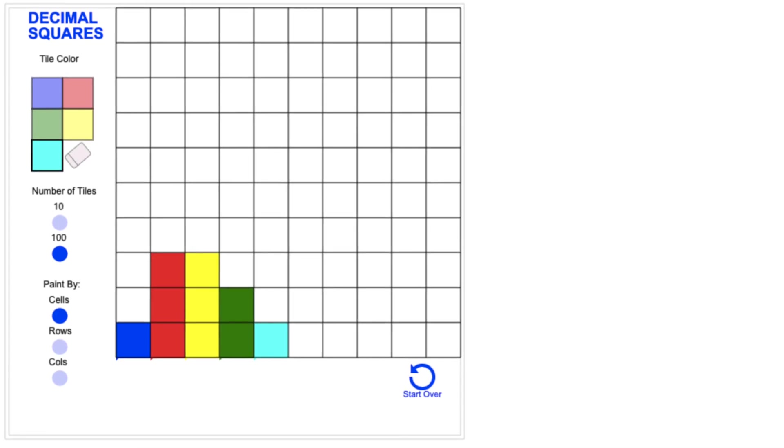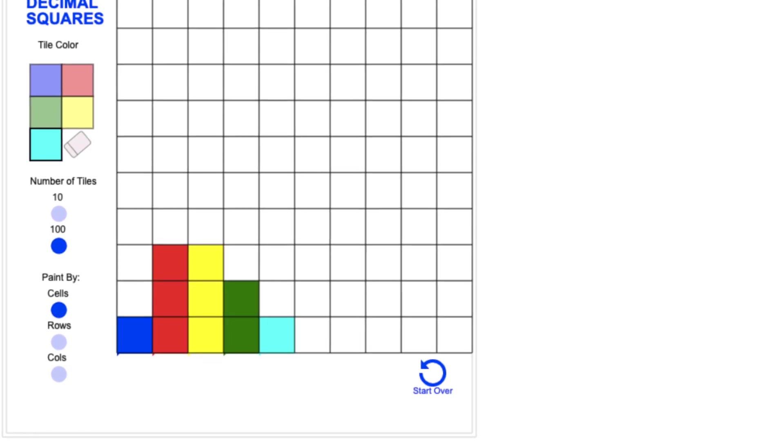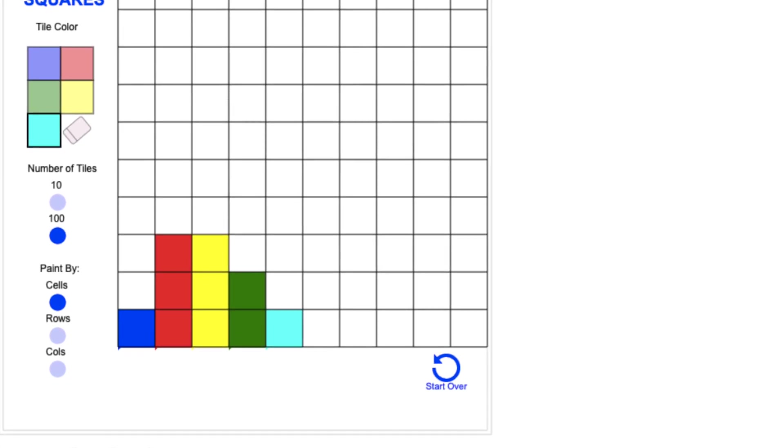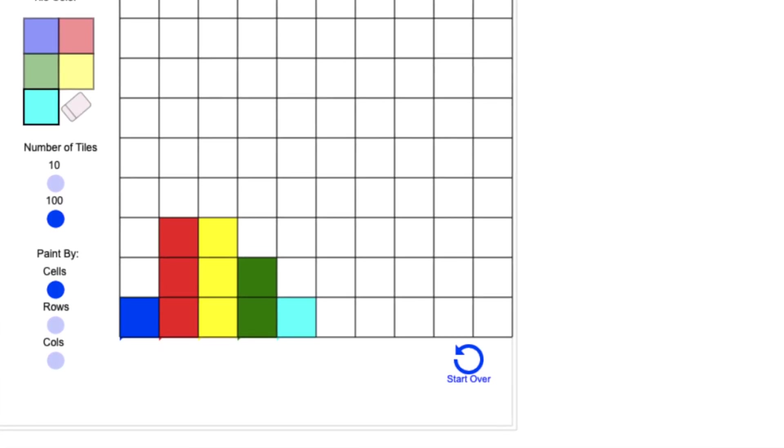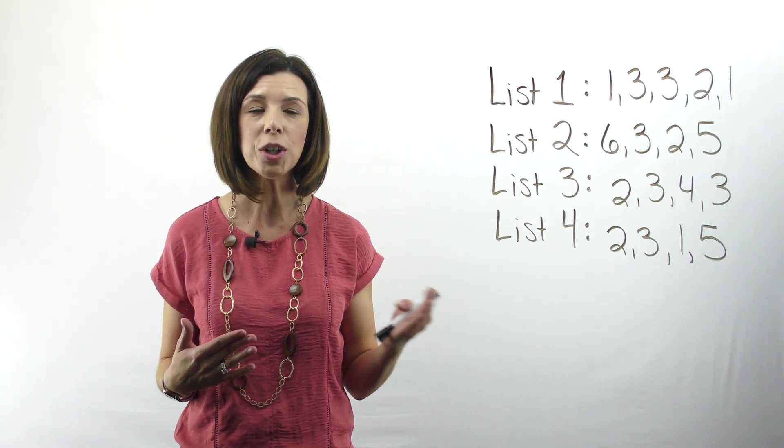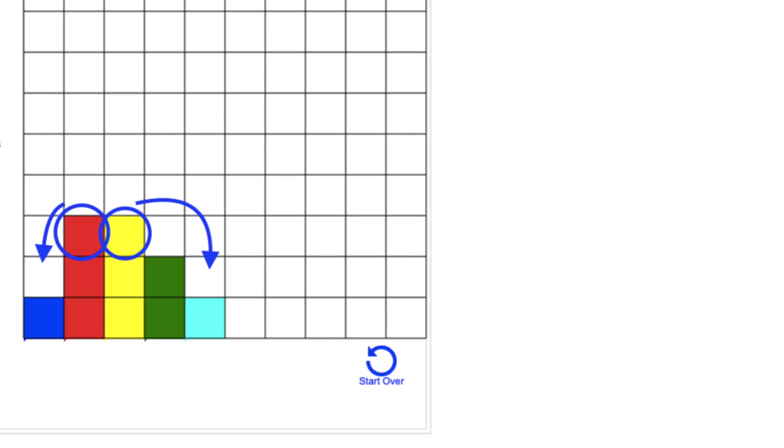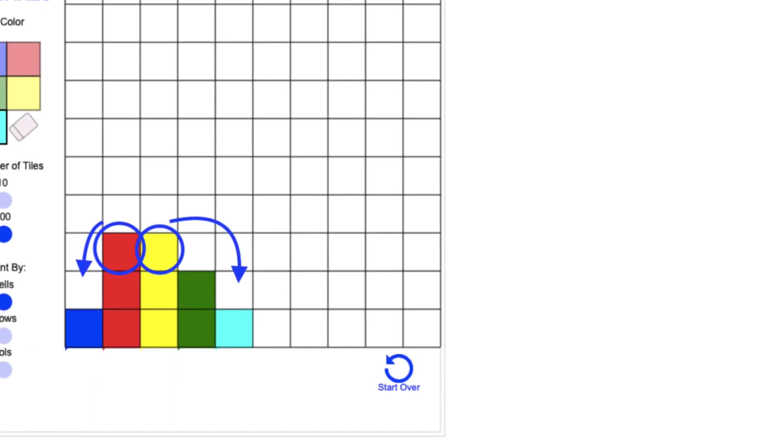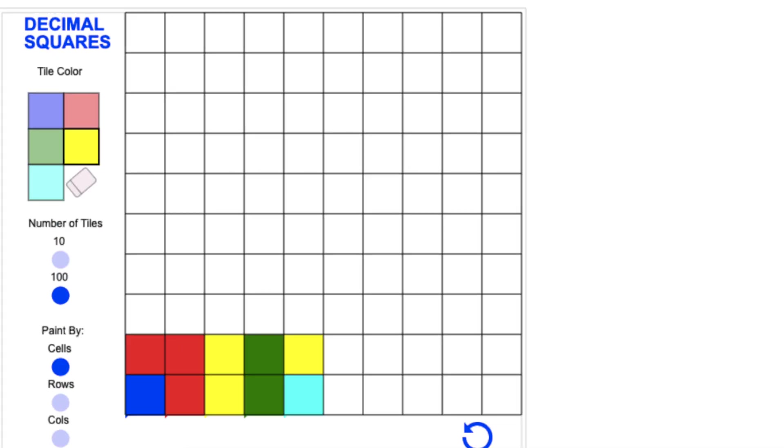You can see for list one, I have one, three, three, two, and one. And notice that when, again, when I record this on my chart, I am recording the exact color. So I'm not changing them to be all the same color. I am literally demonstrating how I'm moving one colored block over to my column.